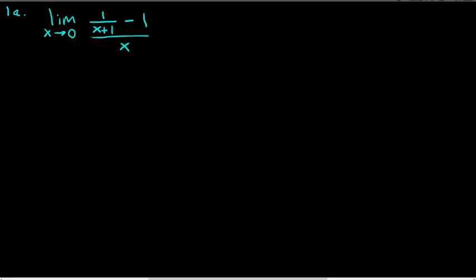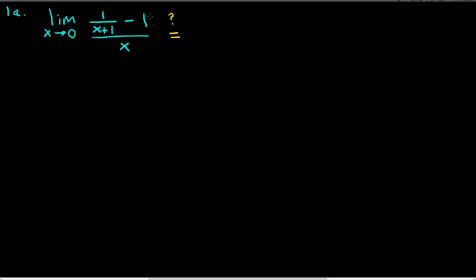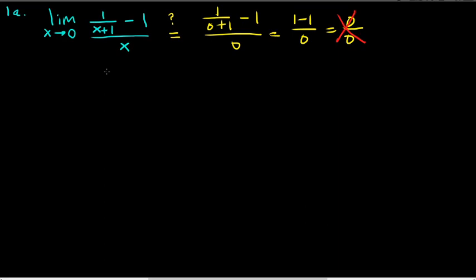Part a: evaluate the limit as x approaches 0 of (1/(x+1) - 1) all over x. Anytime you see limits, the first thing you can always do is just try plugging in the number. Is this function continuous at x equals 0? Of course not. If you plug in x equals 0, you get 0 in the denominator — that's not good — and 1 minus 1 is also 0, so you get 0 over 0, which is undefined and meaningless.